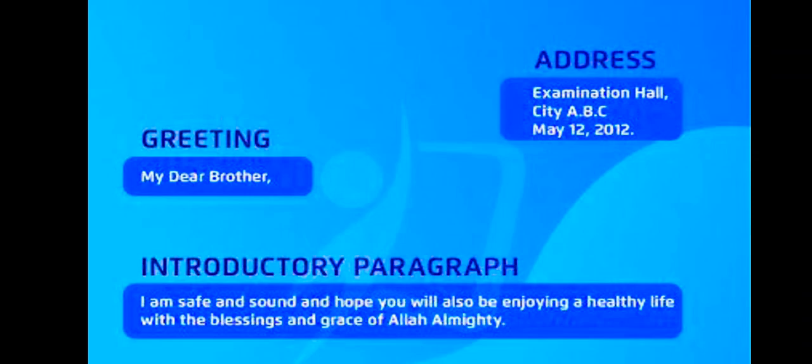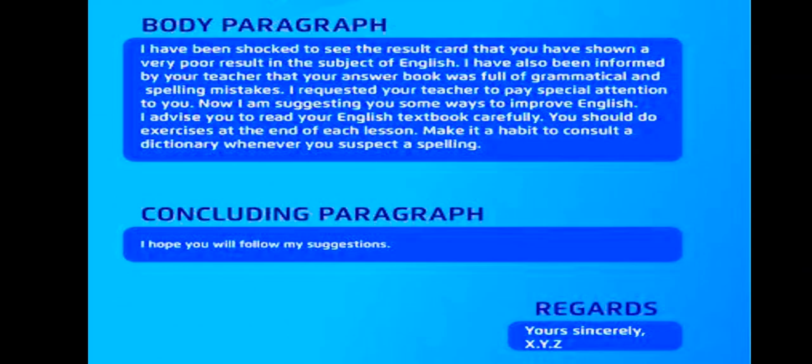After the address, you write the greeting: 'My dear brother' if writing to a brother, or 'My dear friend' followed by a comma. Then you have the introductory paragraph — 'I am in fine health, I hope you are doing well.' Then you have the body paragraph where you write in detail what you wanted to convey. Then you have the concluding paragraph in which you conclude the letter.